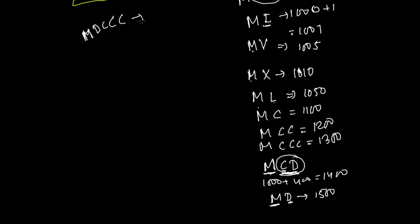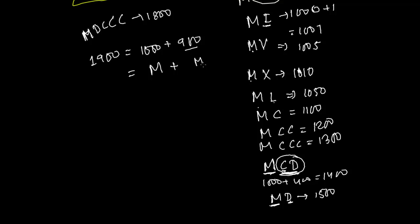To write 1900, think of it as 1000 plus 900. For 1000 we write M, and for 900 we write CM. Combining them: MCM represents 1900.